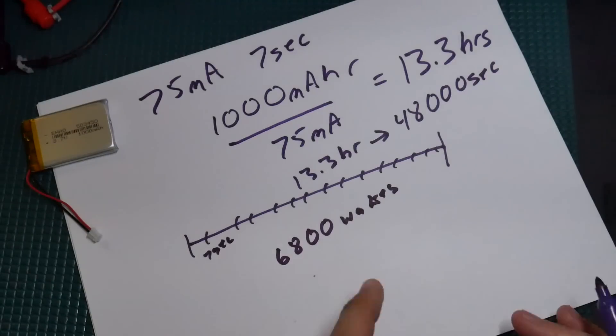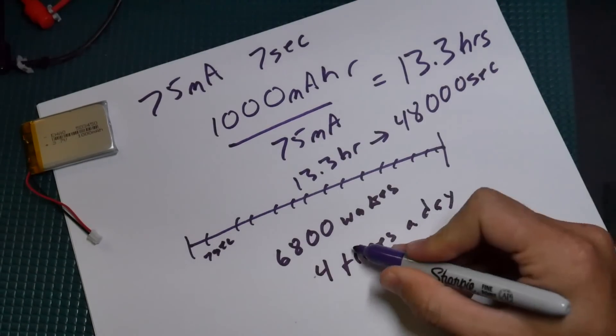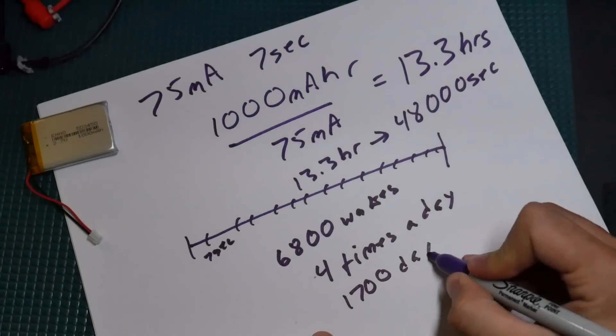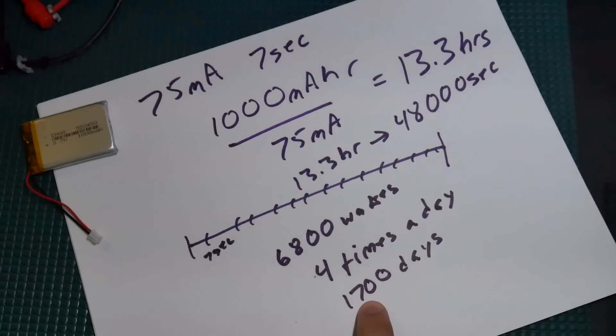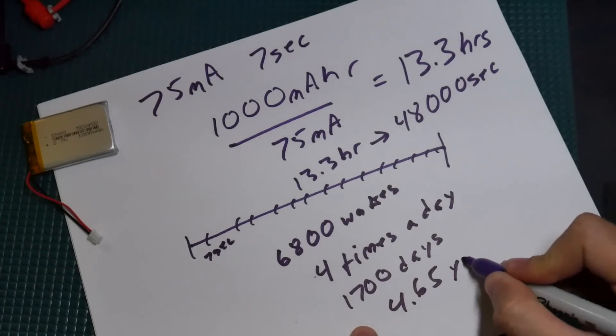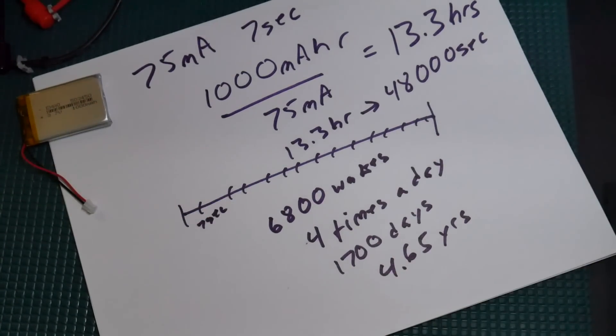So a lot. Now you can take that and figure out how long the battery would last. If it's on the front door and the door opens four times a day, how long would that battery last? Well you take 6,800 and divide by four, that's 1,700 days. Divide by 365 and you get 4.65 years. That's just a very easy way to calculate the battery life.